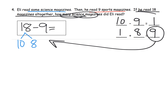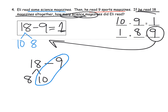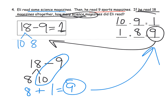Our answer is 9. In the previous approach, we would have decomposed the 18 to be 8 and 10, circled the 10 minus 9 to make a 1, then added in the original 8 and still gotten 9 — but we would do it in an informal way, whereas here we're trying to be a little bit more formal.